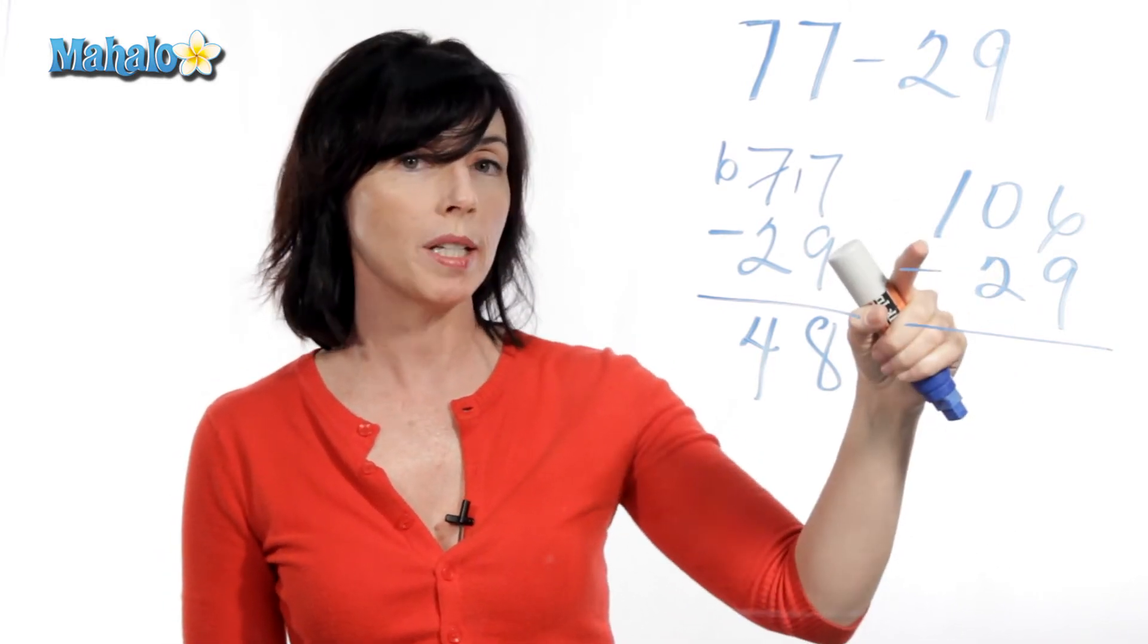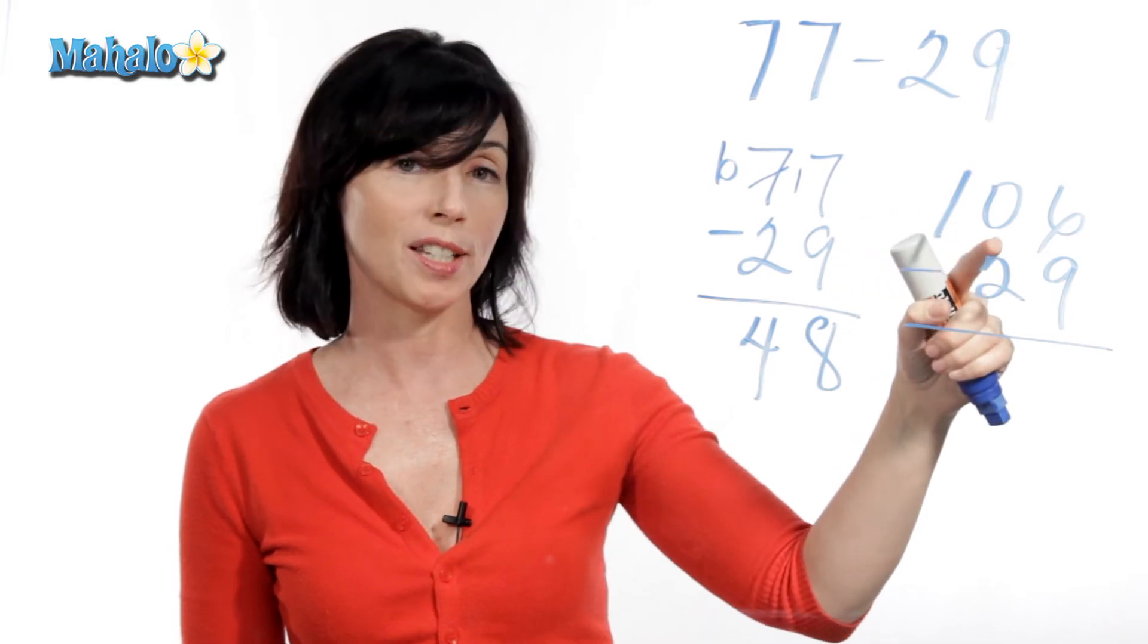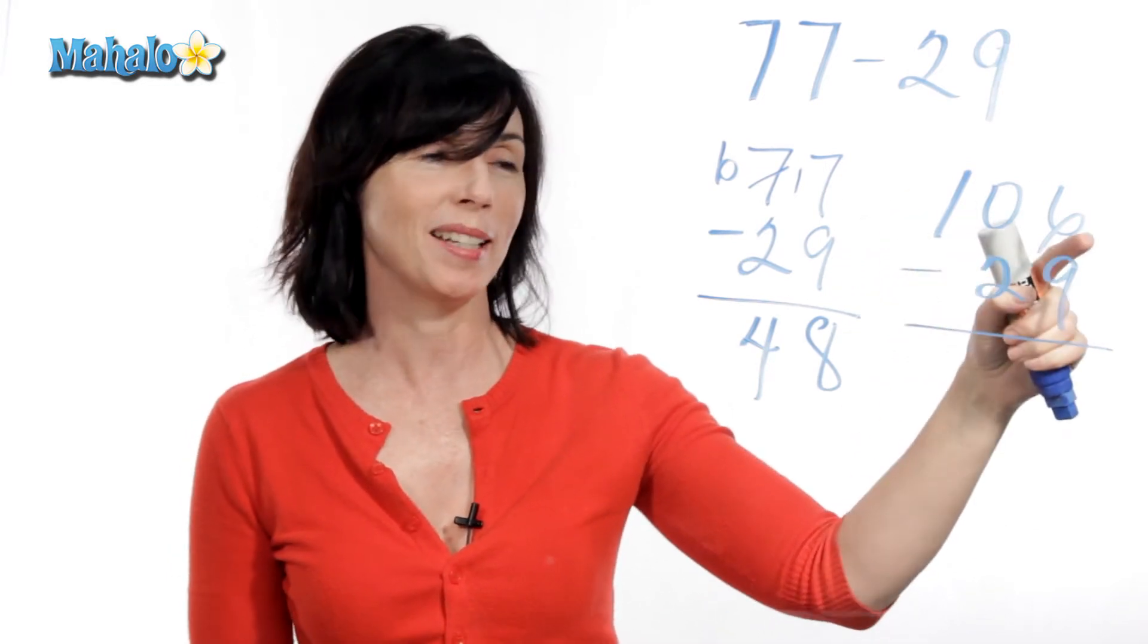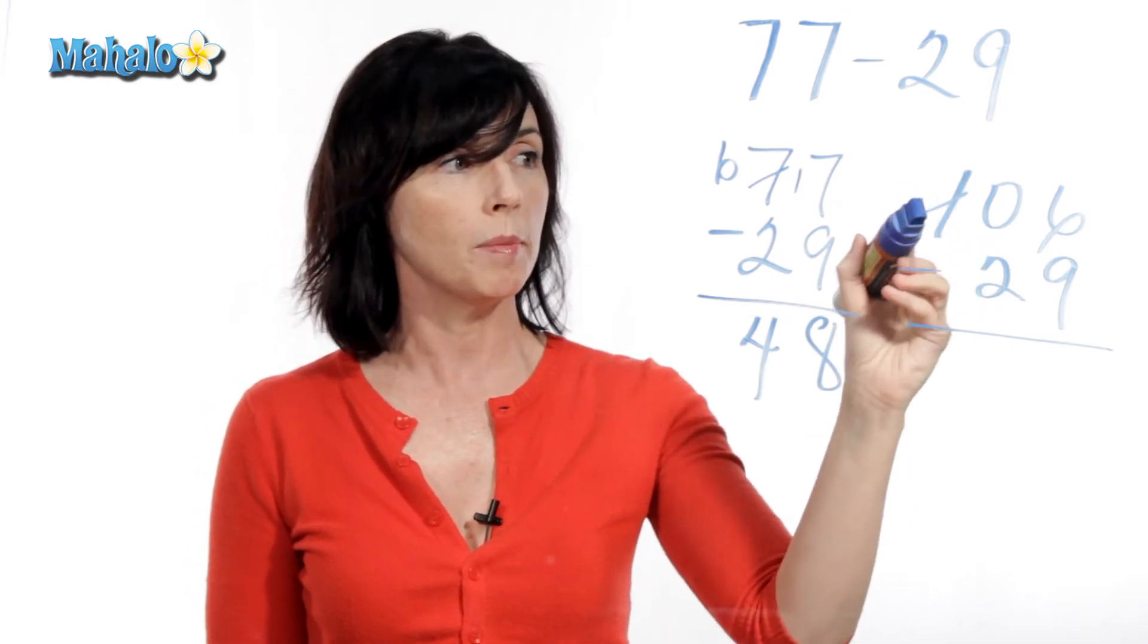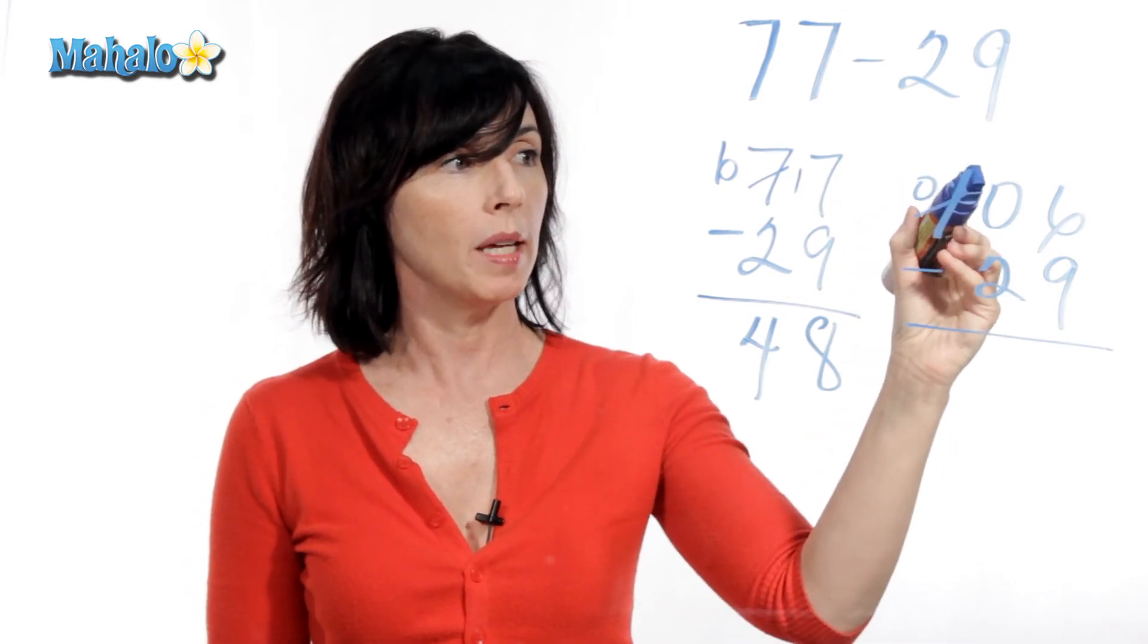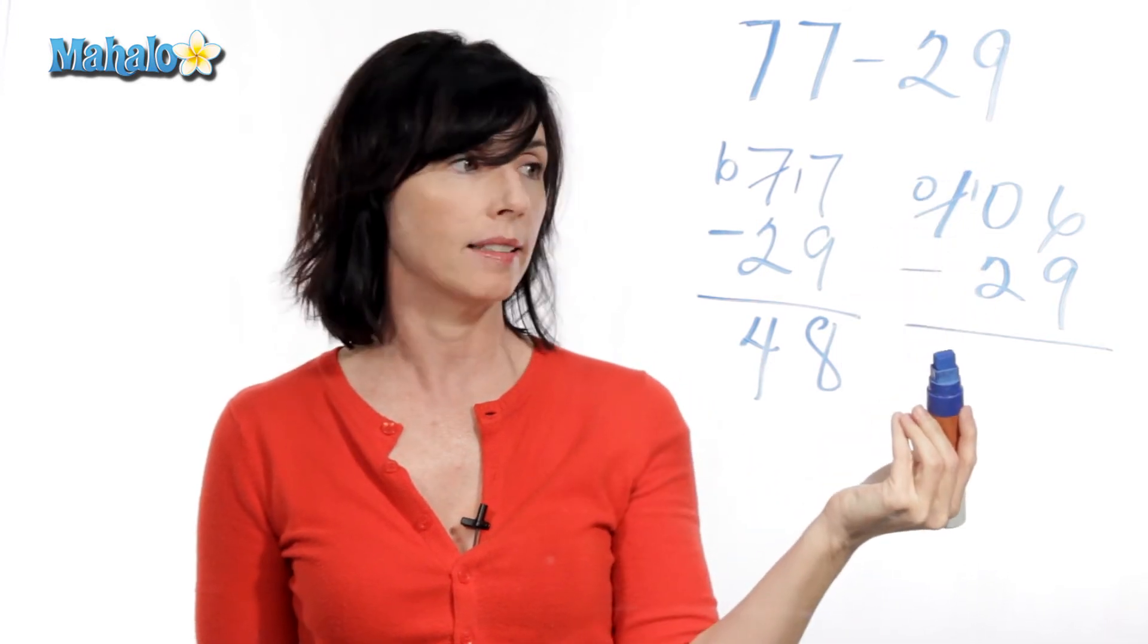So what we're going to do is we're going to borrow from this column and then change this number here, and then borrow from this column and change this number here. So let's go one more column over. Instead of a one, we're just going to make this a zero. And then we're going to make this, instead of a zero, a 10.